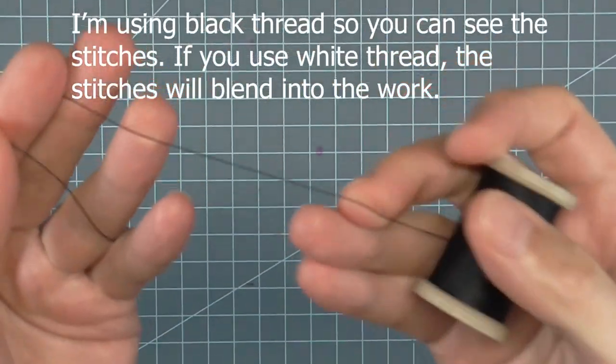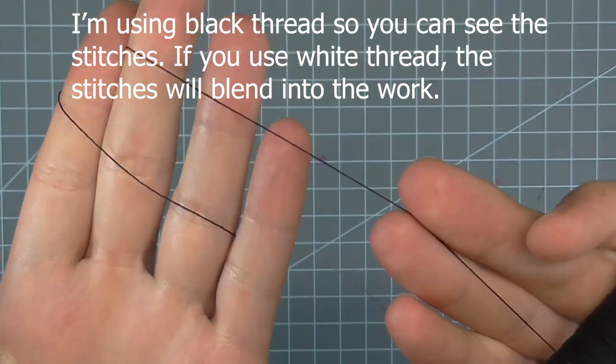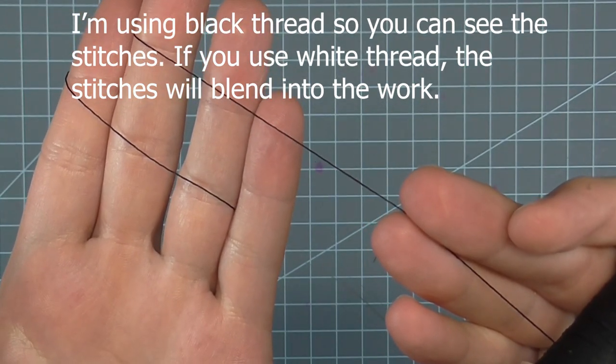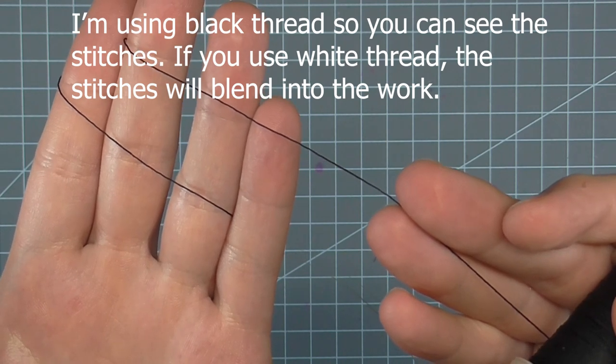Heavy-duty thread is typically used to sew wire to buckram by hand. This is Coates & Clark, but any brand will do. If you don't have heavy-duty thread, you can use double strand of regular sewing thread.